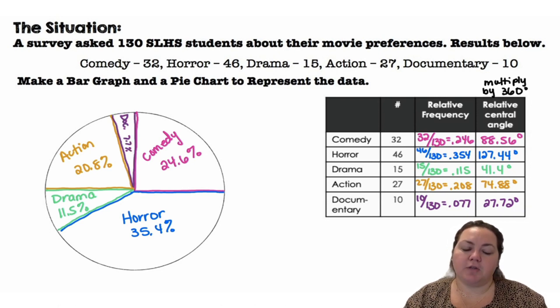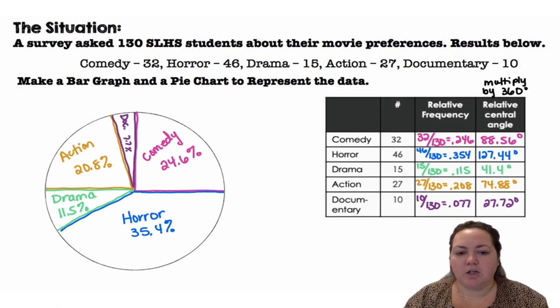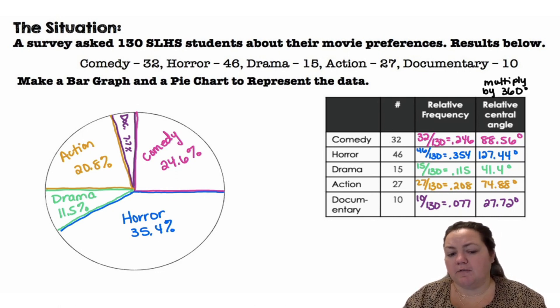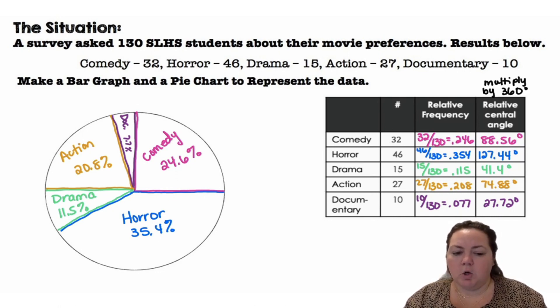For a pie chart, you want to make sure that you have each section labeled. If you're going to use colors, make sure that the colors are identified, or if you're going to use different patterns, indicate what each different pattern represents.